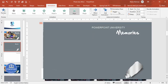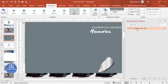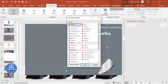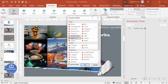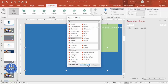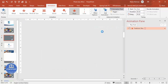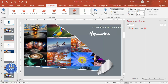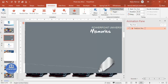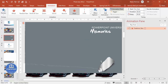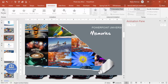Actually, instead of Wipe (an entrance effect), use an Exit effect. Select the shape, go to More Exit Effects, and choose something like Stripes. Set the direction appropriately. When you click during the slideshow, the shape exits and reveals the photos underneath. You can also group shapes and add animation to the group. If you don't want animation, simply delete that shape — it's up to you.